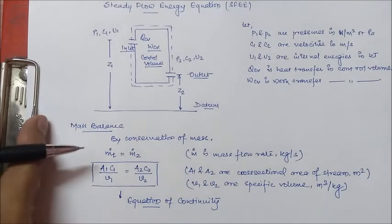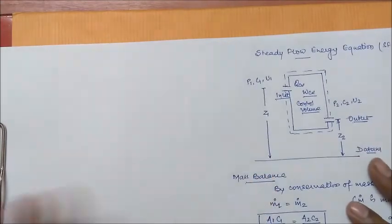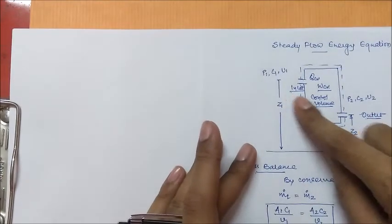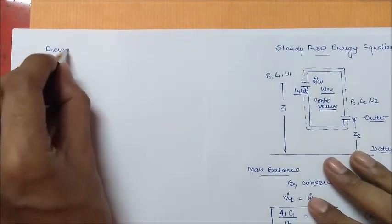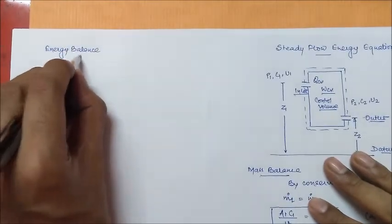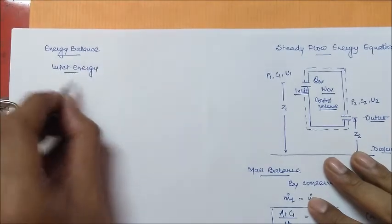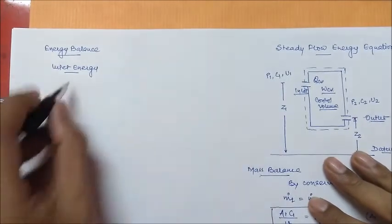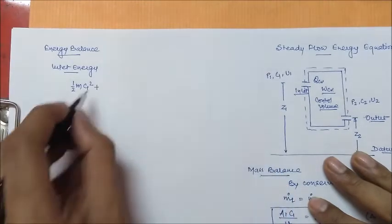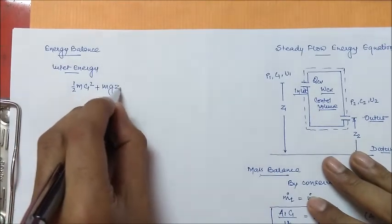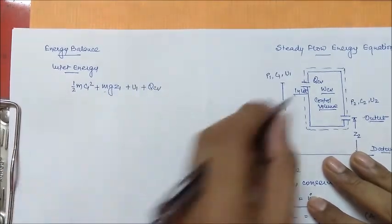Now we will find out the energy balance. At the inlet and outlet we will balance the energies. The inlet energies are: kinetic energy ½mc1², potential energy mgz1, and internal energy u1, plus qcv which is the heat input to the control volume.